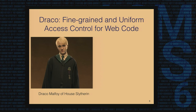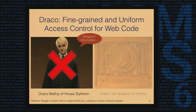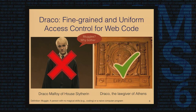To solve the problem of uniform access control for web code, we introduced Draco — fine-grained and uniform access control for web code. We didn't name our system after Draco Malfoy from Harry Potter, because we wanted to be clear our system aims to protect the muggles from evil web code. We named our system after the good guy Draco, who is the first democratic legislator in history, unfortunately known for his strict laws, but we tried to be a little more lenient.